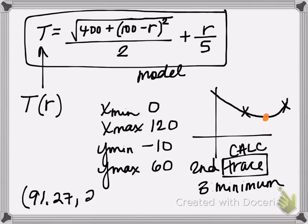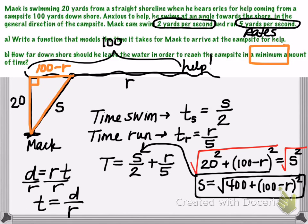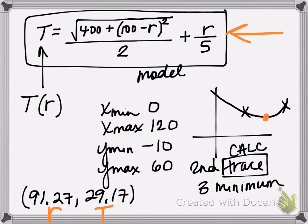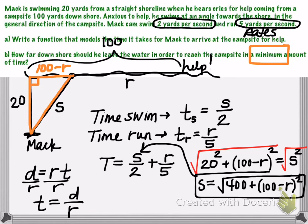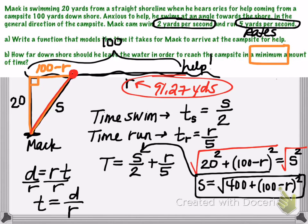29.17. And of course the calculator returns this as X and Y, but you need to label it according to the variables in your model here. So we were putting in an R value and getting out of time. So the question was asking part B, how far down shore he should leave the water. So really we'll be utilizing my R value here of 91.27 to answer the question. So going back to my diagram, then the distance that he's going to run here is 91.27 yards. So we would want Mac then to swim to shore and get out of the water at a point that's 91.27 yards from the person who's needing help.